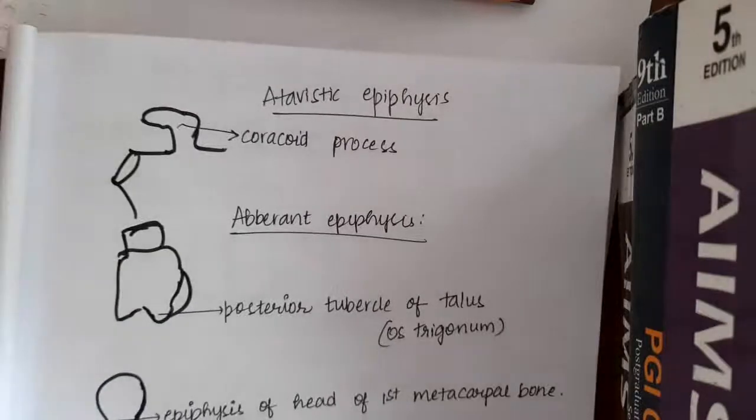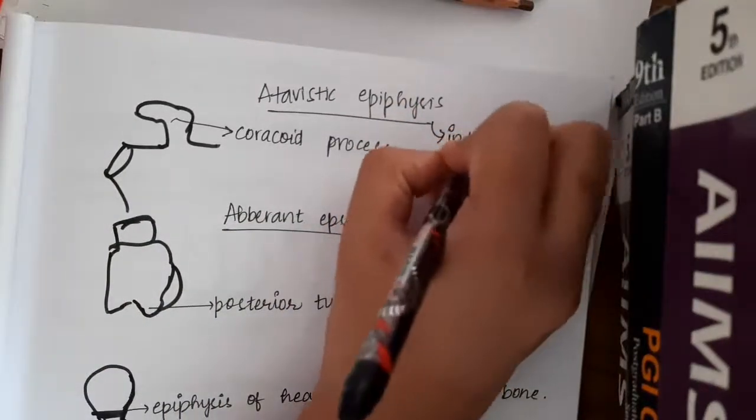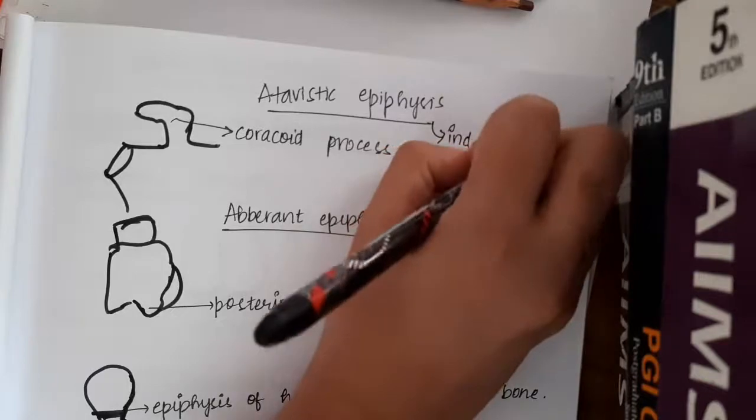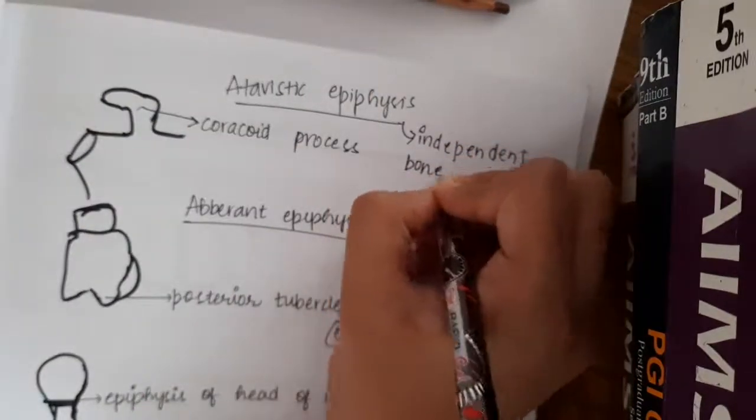Then the third type of epiphysis which is available is called as atavistic epiphysis. Atavistic epiphysis is phylogenetically, it is an independent bone.